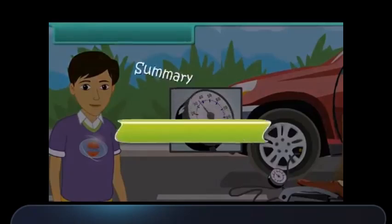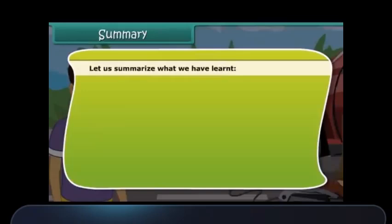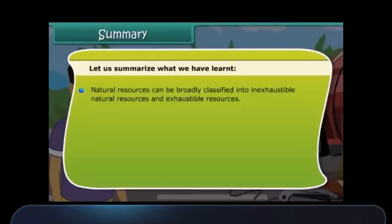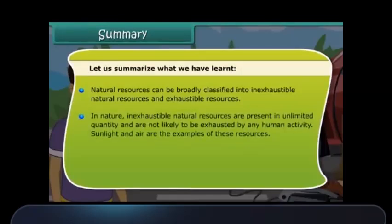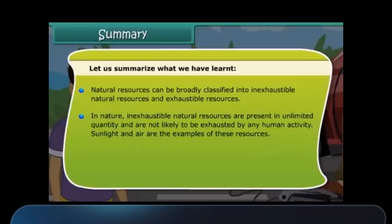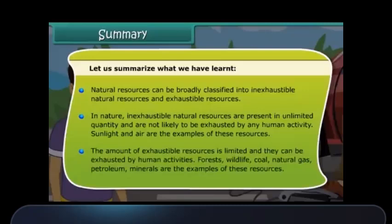Summary. Natural resources can be broadly classified into inexhaustible and exhaustible resources. Inexhaustible natural resources are present in unlimited quantity and are not likely to be exhausted by any human activity — sunlight and air are examples. The amount of exhaustible resources is limited and they can be exhausted by human activities. Forests, wildlife, coal, natural gas, petroleum, and minerals are some examples of exhaustible resources.